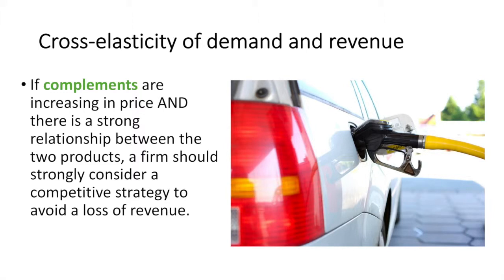In the case of complementary goods, a producer should consider how an increase in the price of a complement will impact their sales. For example, if the price of petrol rises, a car manufacturer should consider how it will affect car sales. Toyota, like most manufacturers, sells larger and smaller cars, and also electric cars. If the price of petrol rises, they may expand their electric car offerings. Again, this depends on many things, including how high petrol prices rise and how long they are expected to remain high.